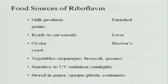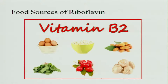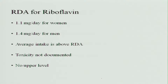Food sources of riboflavin: the richest source is milk, but it must be stored in a dark bottle, as riboflavin gets oxidized when exposed to sunlight. Other sources include ready-to-eat cereals, oysters, yeast, and green leafy vegetables. It should always be stored in an opaque plastic or dark container, or wrapped in paper. The recommended dietary allowance is 1.1 mg for women and 1.4 mg per day for men.